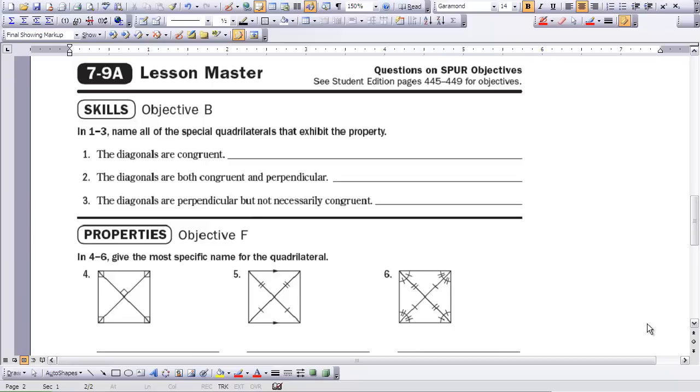So we'll work on these problem sets here, one through six, but I want you to have your hierarchy that we just worked on available so that you can look at it. We want to name all the special quadrilaterals that exhibit the properties listed below.